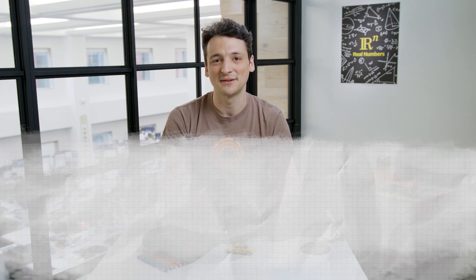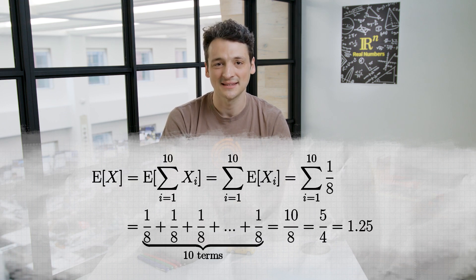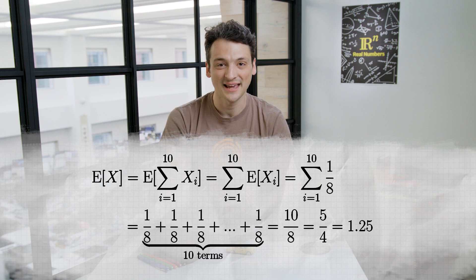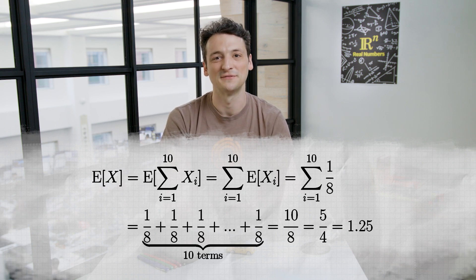So now we can use linearity of expectation, since x is the sum of the x sub i from 1 to 10, the expected value of x is the expected value of this sum, and that's the sum of the expected value of x sub i from 1 to 10. That's just 10 copies of 1 over 8, so 10 over 8, or 5 over 4, or 1.25.